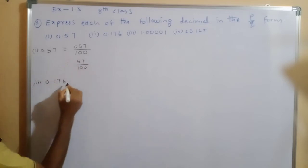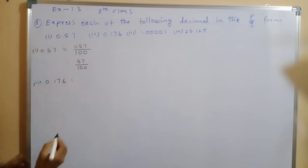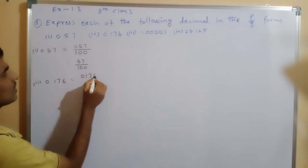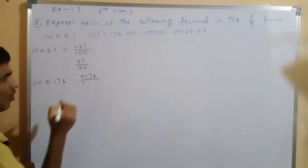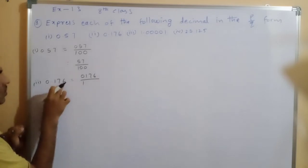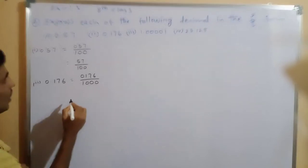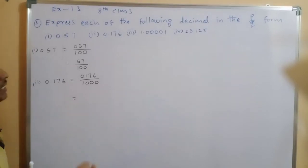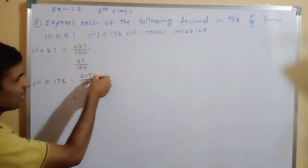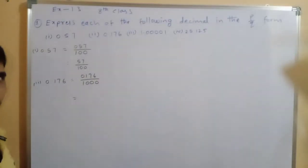Second problem: 0.176. Again, terminate the point — we get 0176 divided by, before the point write 1, after the point there are 3 digits so write 3 zeros: 1000. The last digit is an even number, so both numerator and denominator are divisible by 2.